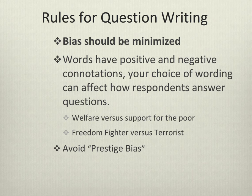Bias should be minimized. Words have positive and negative connotations and your choice of wording can affect how individuals respond. For example, if you ask people if they support welfare, the majority say no. But if you ask them if they support assistance for the poor, the majority say yes — those are actually the same thing. The word 'welfare' has some bias in it. This is one type of leading question: if there's bias in wording, the question becomes leading and it pushes people towards a particular answer. In addition, you want to avoid prestige bias — when you associate something with a famous person — because then people are responding to that individual rather than the actual survey question.